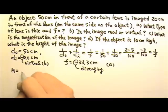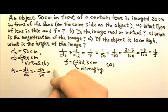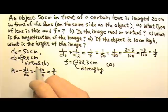The magnification is negative DI over DO. So this is negative, negative 20 divided by 50. So the magnification is 2 fifths. It's positive because it's a virtual upright image.